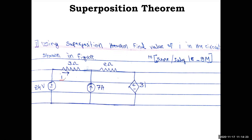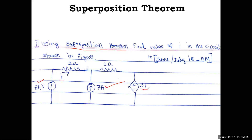There are different methods available — no particular method is required unless specified. Here it is mentioned to use superposition theorem. If not mentioned, you could go for source transformation, mesh analysis, or node analysis. The key is to identify how many sources are there. Here we have two sources: a 7 amp current source and a 24 volt voltage source. The dependent voltage source should be left untouched — it is not treated as independent.